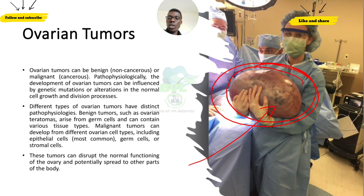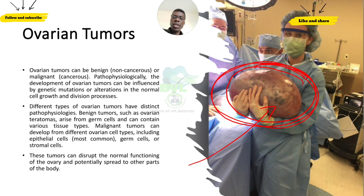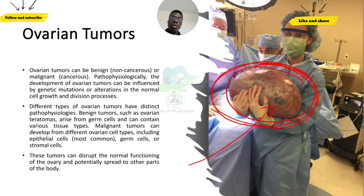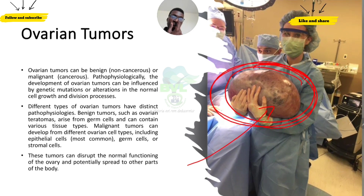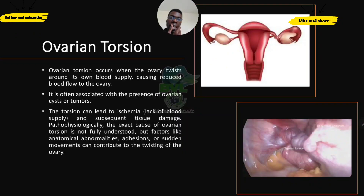The most common type of ovarian tumor is usually benign rather than malignant. If you're a student, you can pause the video and write these things down. I won't explain everything in detail due to time — we have other topics to cover.